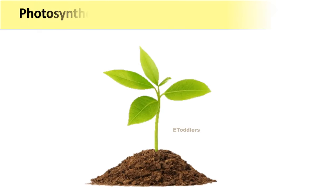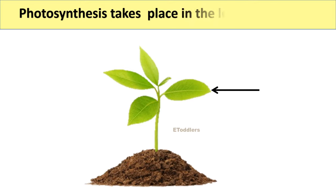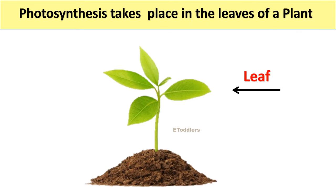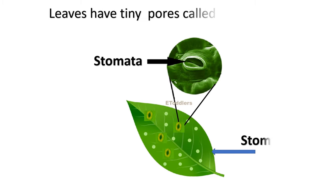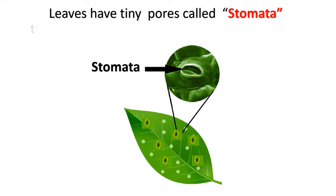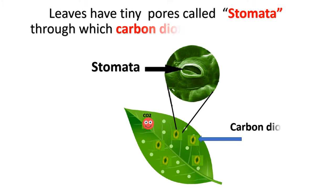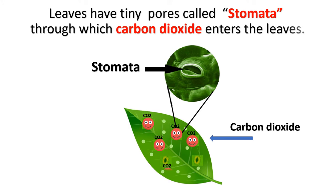Photosynthesis takes place in the leaves of a plant. Plants have tiny pores called stomata, through which carbon dioxide enters the leaves.